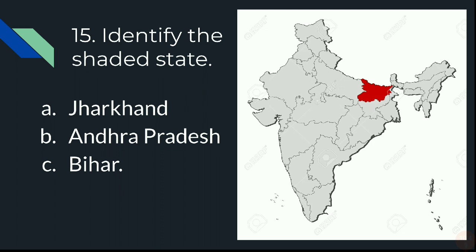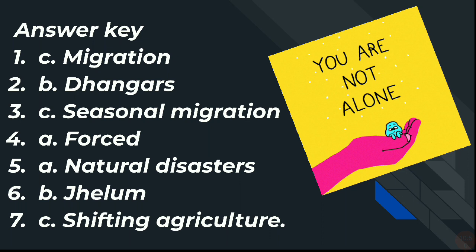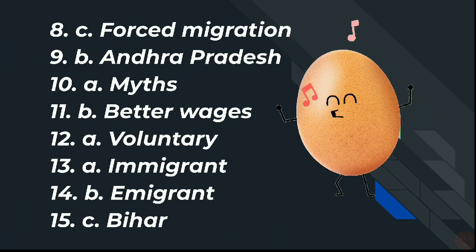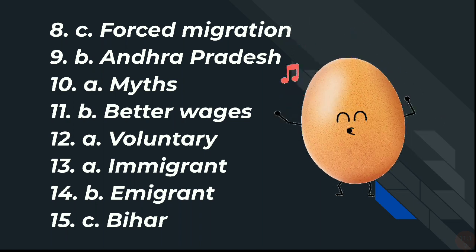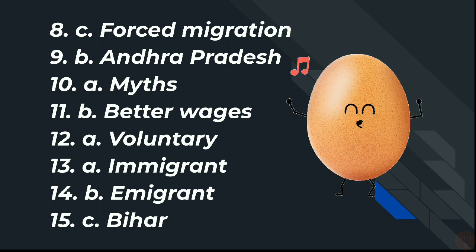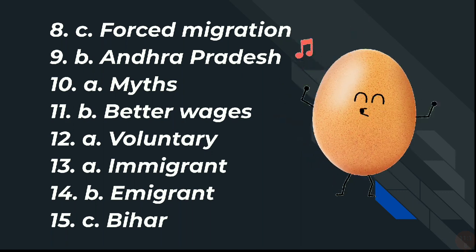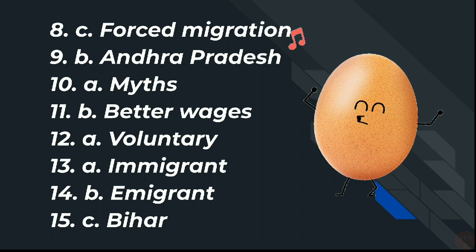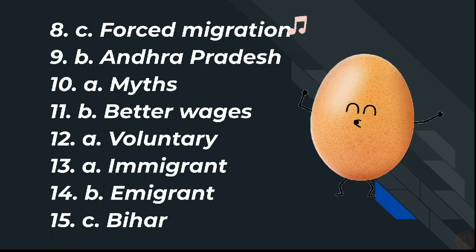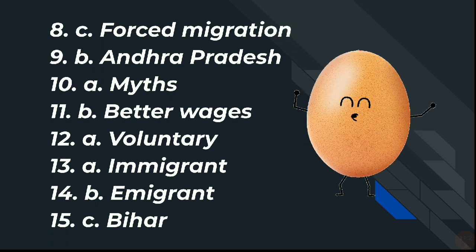Those were all 15 questions. Now let's continue with the answer key. Answer 1: C — Migration. 2: B — Dhangas. 3: C — Seasonal migration. 4: A — Forced. 5: A — Natural disaster. 6: B — Jhelam. 7: C — Shifting agriculture. 8: C — Forced migration. 9: B — Andhra Pradesh. 10: A — Myths. 11: B — Better wages. 12: A — Voluntary. 13: A — Immigrant. 14: B — Emigrant. 15: C — Bihar.